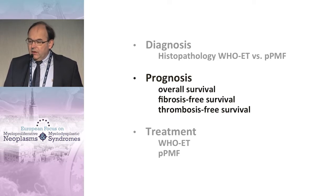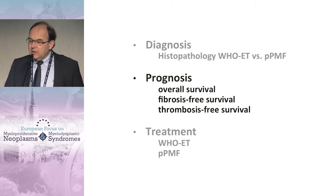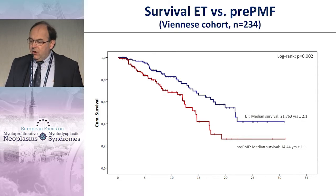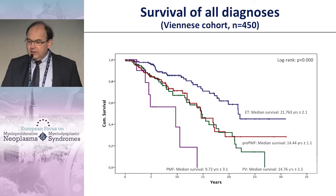What is the importance of this classification for overall survival, progression to fibrosis, and thrombosis-free survival? When distinguishing between WHO ET and pre-fibrotic myelofibrosis, we see a clearly prolonged survival in WHO-classified ET — 21.7 years — compared to pre-fibrotic myelofibrosis at 14.4 years. That is a seven-year difference in overall survival between these two entities.